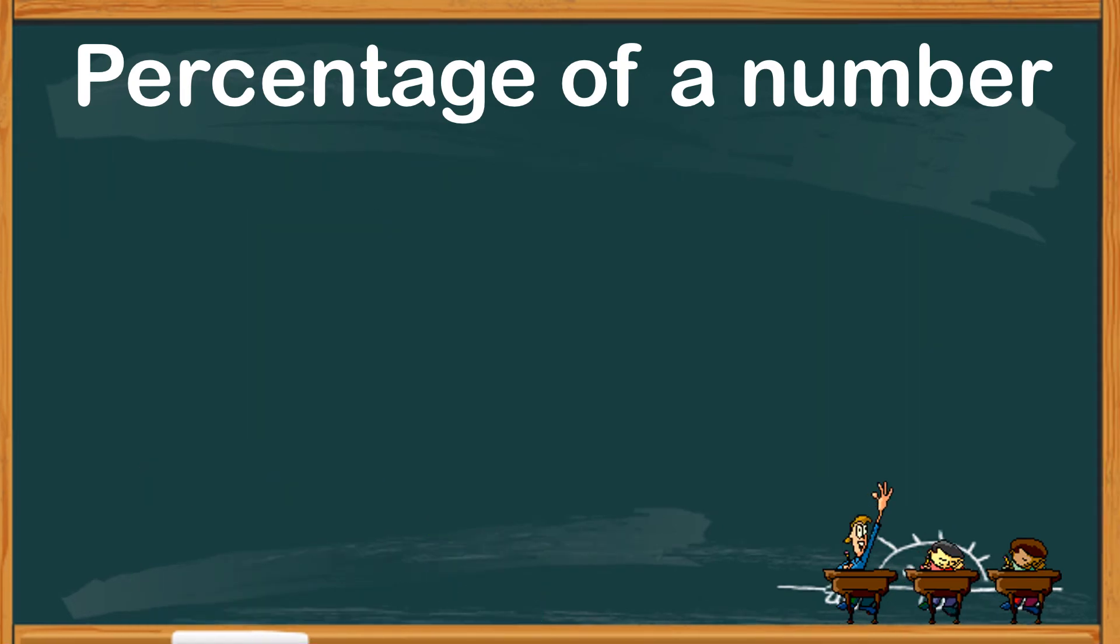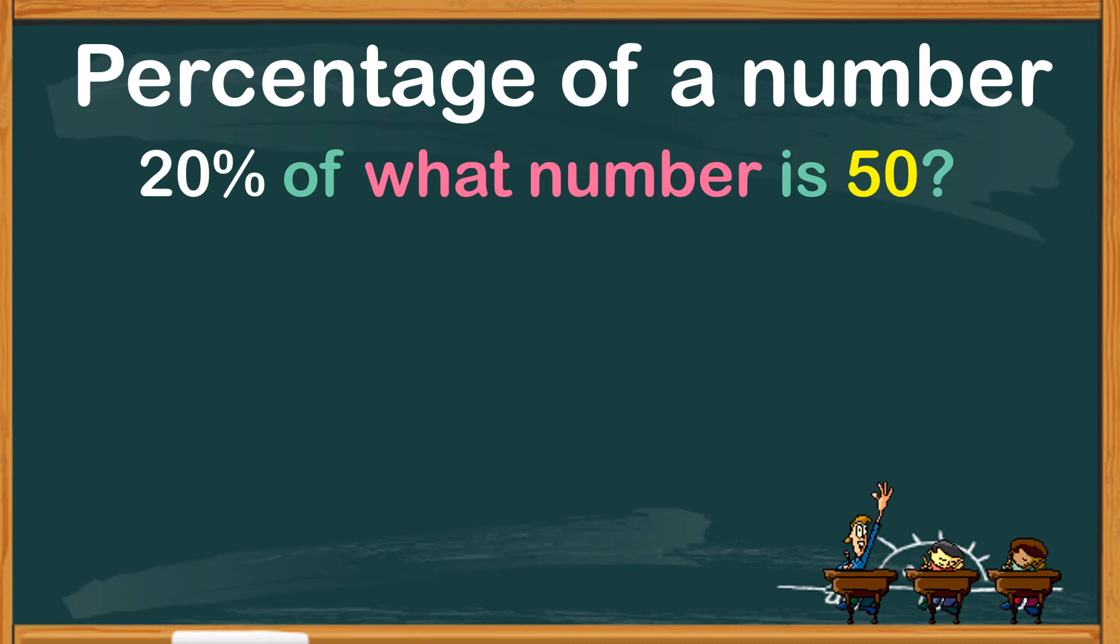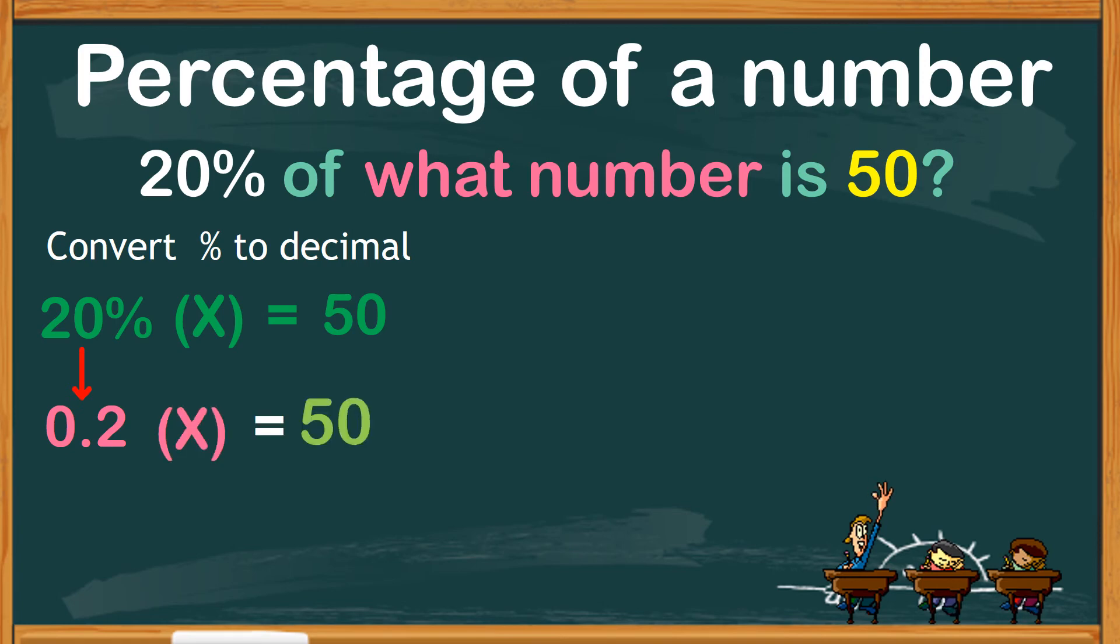Here is another question pattern. 20% of what number is 50? Let's write the question in a number sentence to clearly understand what the number is asking for. So, 20% of an unknown number represented by x is equals to 50. We can now start by converting percent into a decimal. So, 20% in decimal is 0.2 of an unknown number represented by x equals 50. We only need the value of x, so on the left side of the equation, we must get rid of 0.2 by dividing with the same number and do the same on the right side of the equation.